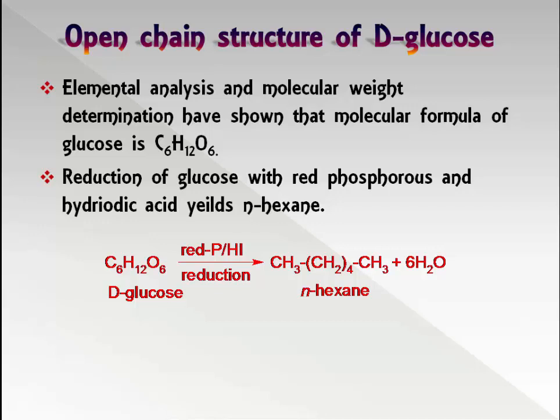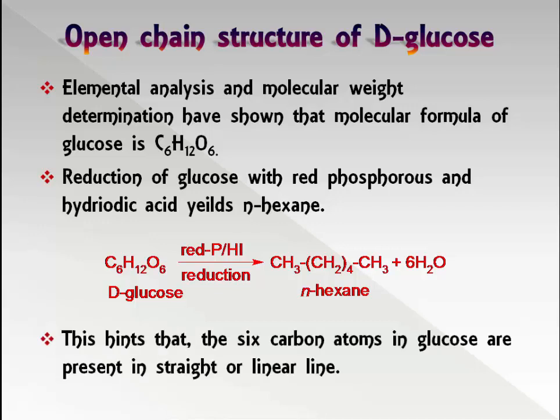Reduction of glucose with red phosphorus and hydroiodic acid yields n-hexane. This hints that the six carbon atoms in glucose are present in a straight or linear chain.